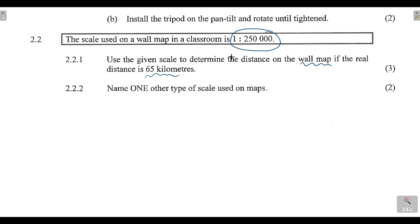In this video tutorial we are looking at map scales. We are given a number scale and we are going to use it to convert an actual or real distance into the length on a map. The scale used on the classroom wall map is 1:250,000. Question 2.2.1 asks us to use the given scale to determine the distance on the wall map if the real distance is 65 kilometers.